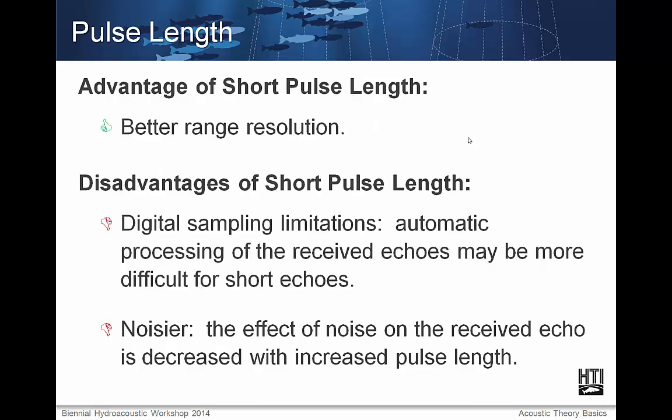There is an obvious advantage to shorter pulse lengths: the ability to resolve objects that are closer together increases. However, the disadvantages of shorter pulse length include that converting the analog pulse received to a digital sample for recording is made more difficult as the pulse length gets smaller, and the effect noise has on an acoustic pulse is increased as its pulse length is decreased.